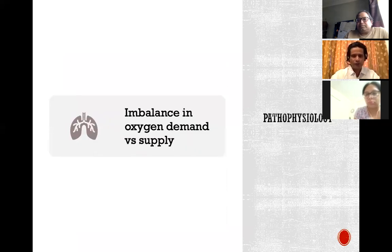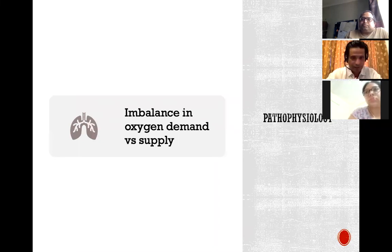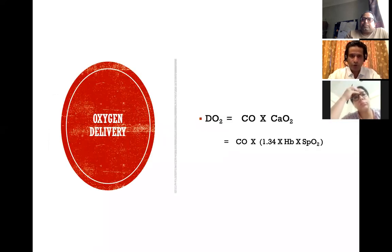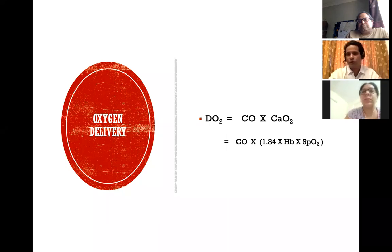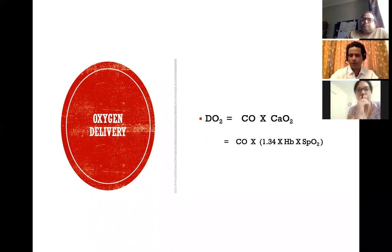The first step is the imbalance in oxygen demand versus supply. Some people have enough oxygen but have a supply problem; others have used so much oxygen that they've exhausted their supply. I'm sure all of you are familiar with the formula for oxygen delivery, which is simply your cardiac output times the oxygen content of your blood. Oxygen content is calculated as 1.34 — the oxygen-carrying capacity per gram of haemoglobin — multiplied by total haemoglobin and your saturation. Any factor affecting cardiac output, haemoglobin, or oxygen saturation will cause a problem with oxygen delivery.